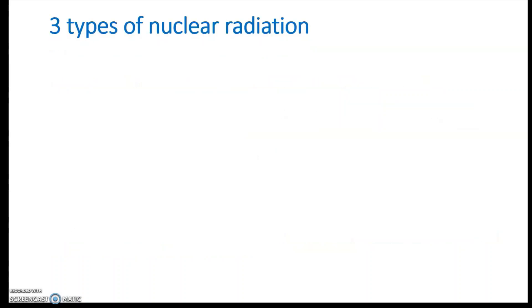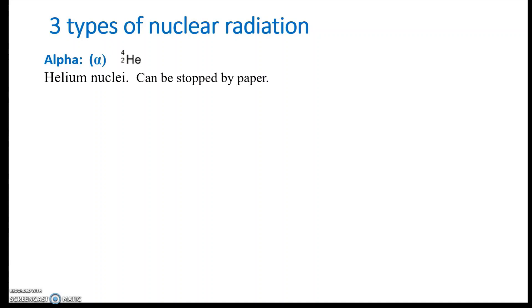There are three types of nuclear radiation. The weakest and least dangerous type is alpha radiation, which is simply a helium nucleus. It's fairly weak — it can be stopped by a piece of paper. It's not like in the movies where it zaps through anything. Some forms of radioactivity, like alpha, are really not that dangerous in terms of penetration.